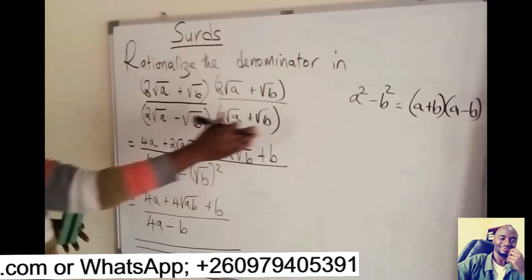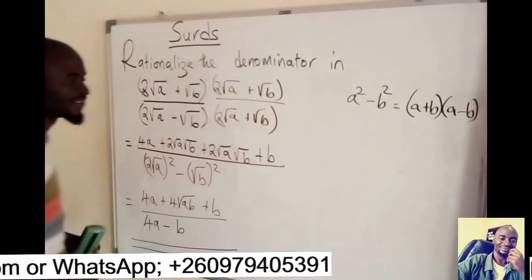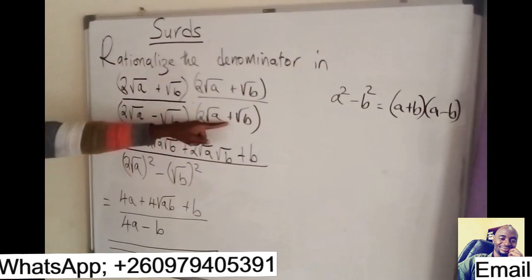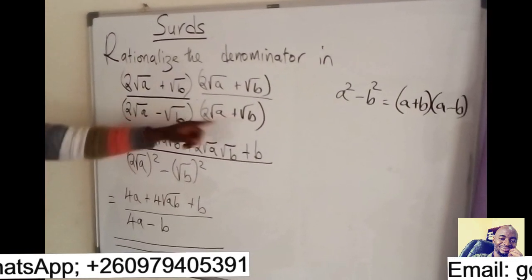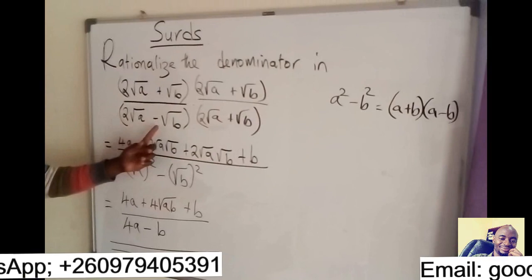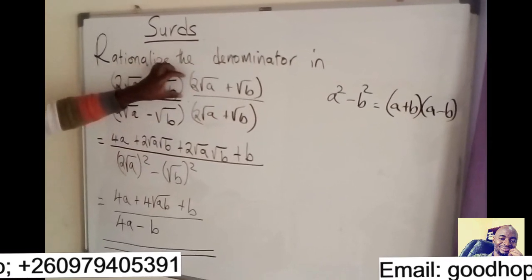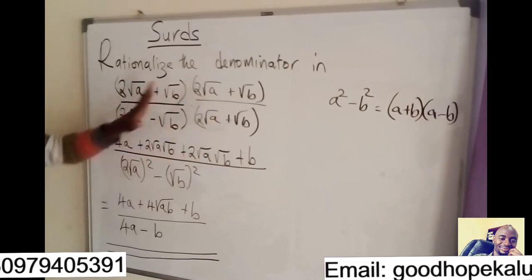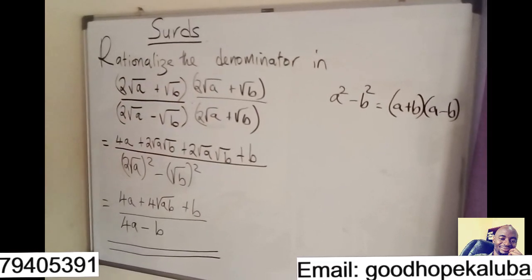Its conjugate, you look at the factorization of difference of two squares. If you have A minus, you are going to have the plus for the conjugate. If you have A plus, you have A minus, but it has to multiply the numerator and the denominator. Because when you divide, you are going to have one, so meaning you've not changed your statement.